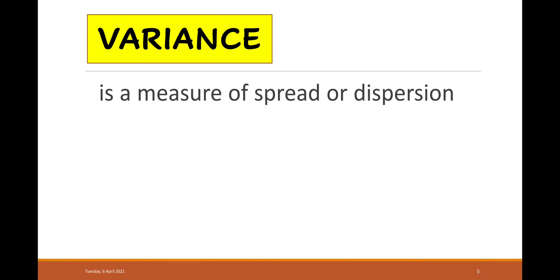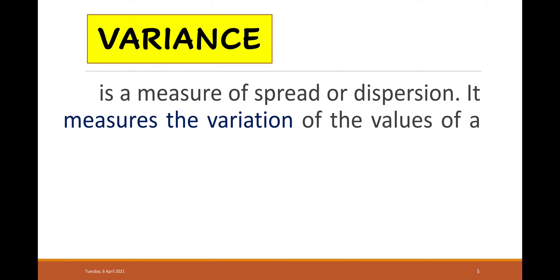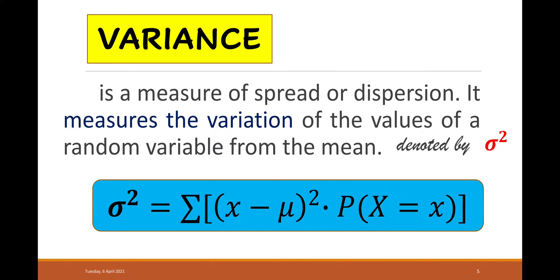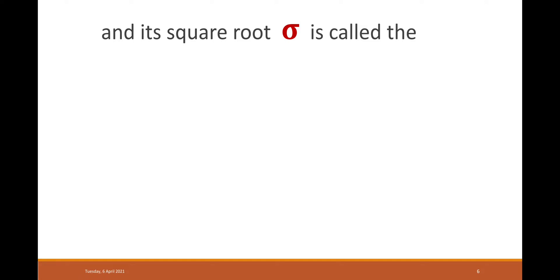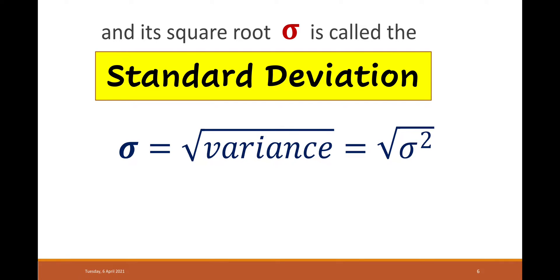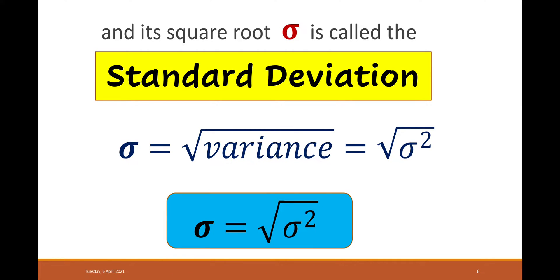Variance is a measure of spread or dispersion. It measures the variation of the values of a random variable from the mean, and is denoted by sigma squared. The formula for finding the variance is the sum of the squared difference of x and the mean multiplied by the probability of x. The square root of sigma squared is called the standard deviation — that is, the standard deviation is equal to the square root of the variance.